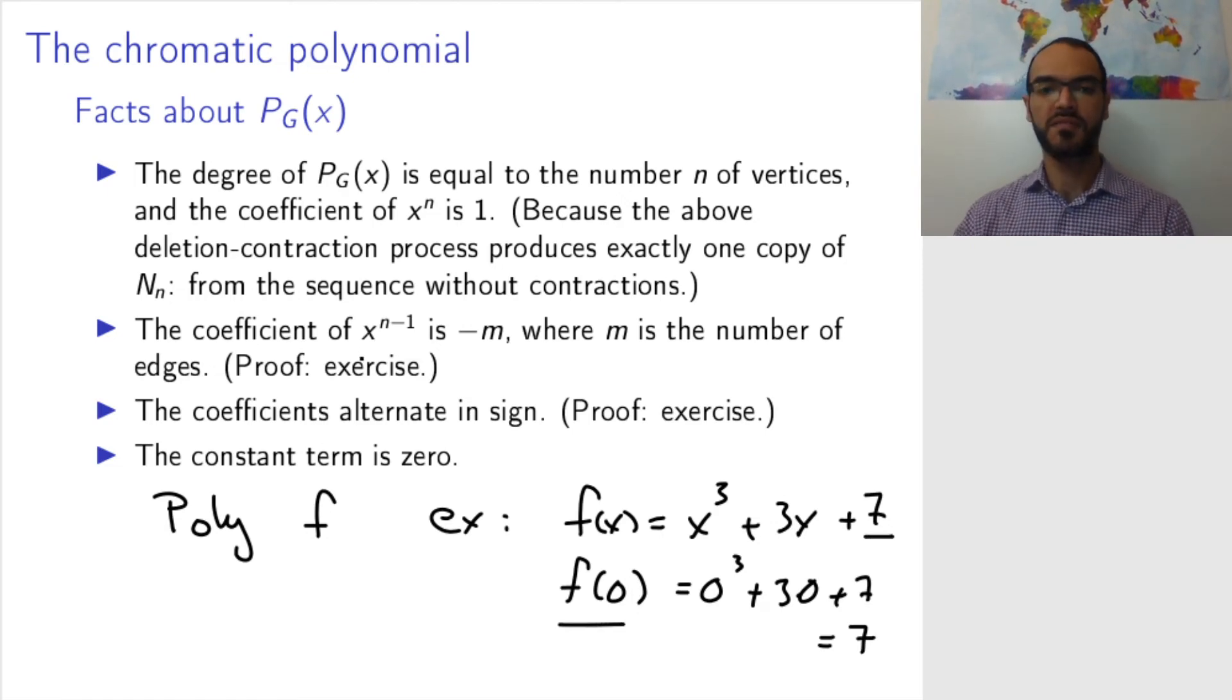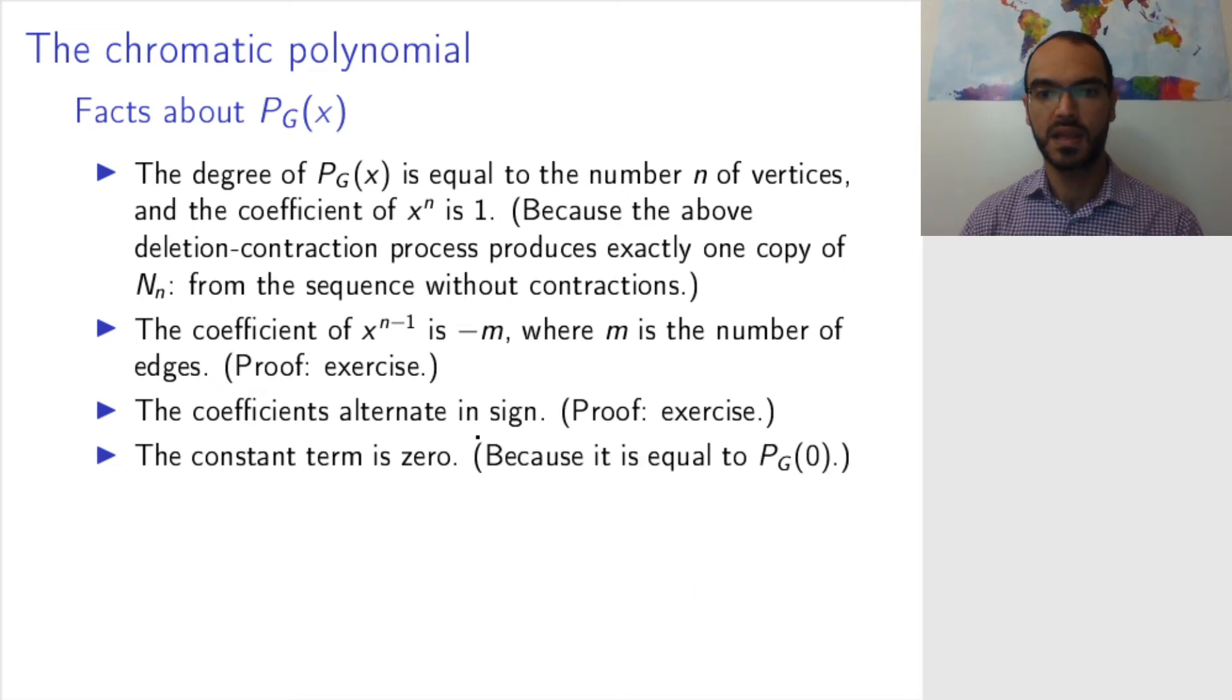But what is the value at 0 of P_G of k? Well, P_G of 0 is the number of colorings of the graph in 0 colors. And since you have at least one vertex, this is impossible, so this number must be 0 for any graph because you cannot color a graph with 0 colors. That's why the constant term is 0.